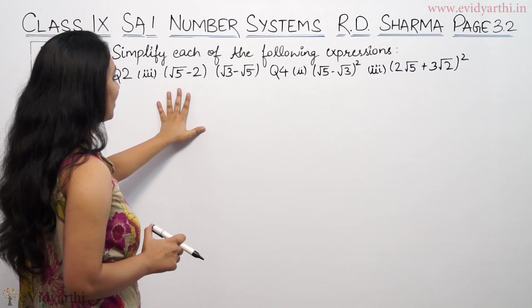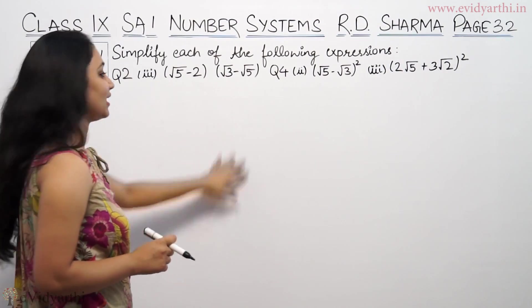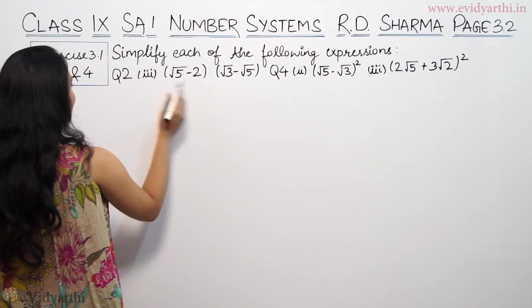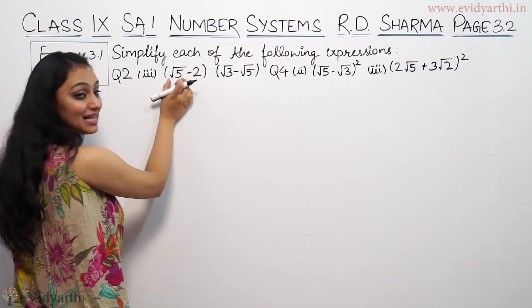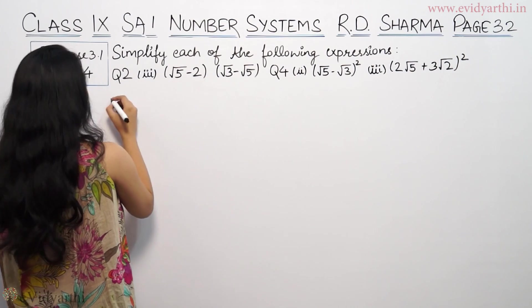So the first expression given is (√5 - 2)(√3 - √5). You have two brackets. Whenever you have two brackets, first you multiply this number with this bracket and this number with this bracket.